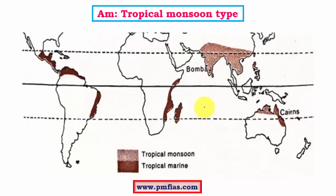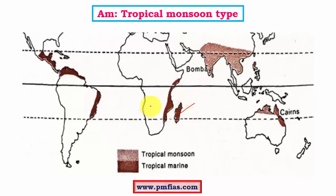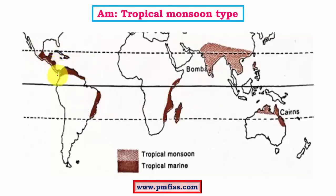Monsoon type of climate with three distinct seasons - summer, rainy, and winter - is found in India, Southeast Asia, and northern parts of Australia. There is a slight variation called tropical marine type, found in islands like Madagascar, regions of eastern Africa, parts of eastern South America, and the region between North and South America. The major difference is that rainfall is well distributed throughout the year in tropical marine, whereas there is a distinct dry season in tropical monsoon.